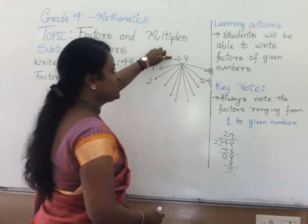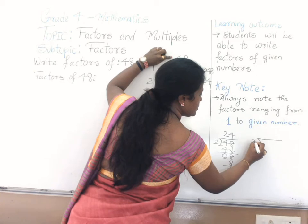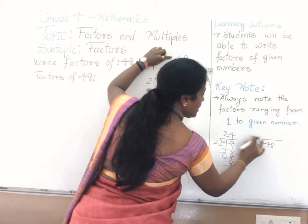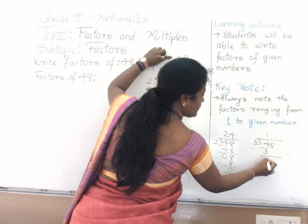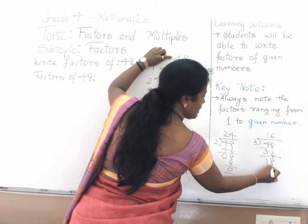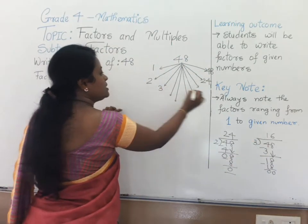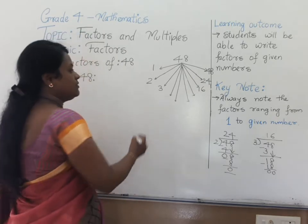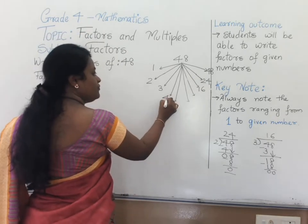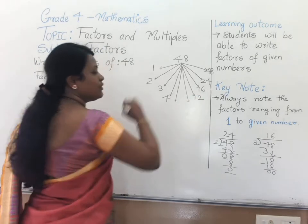Let us check with 3. Divide 48 by 3: 3 16s are 48. Let us try one more — 4. Yes, 4 12s are 48.